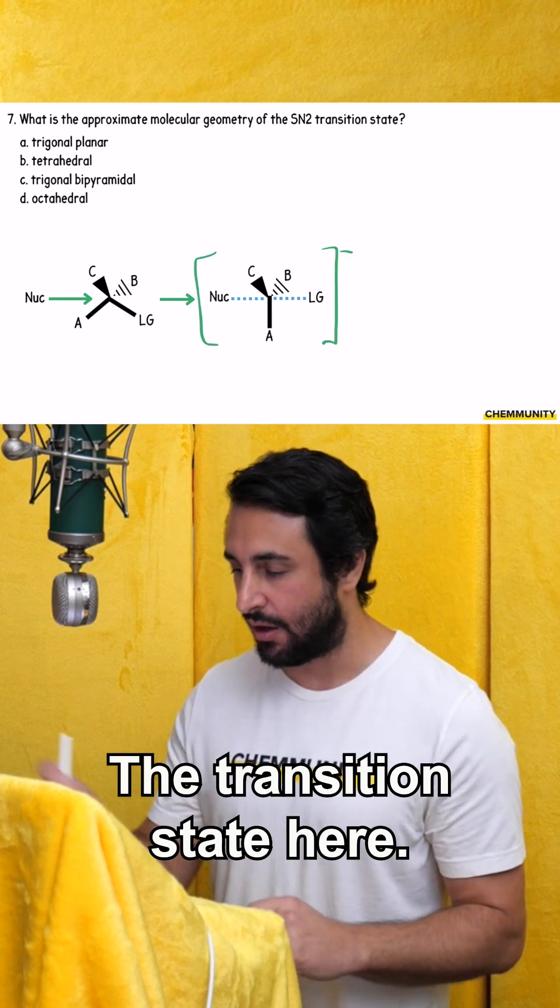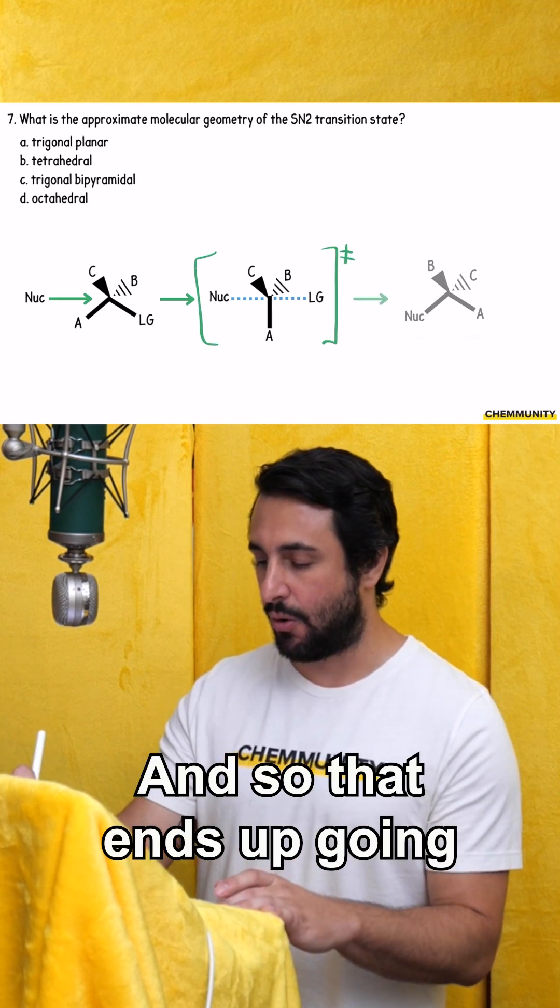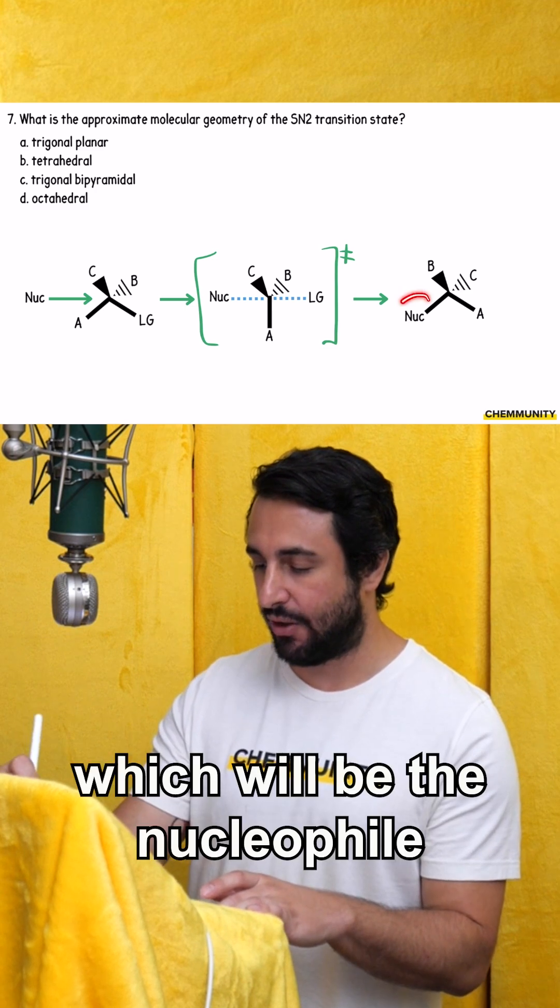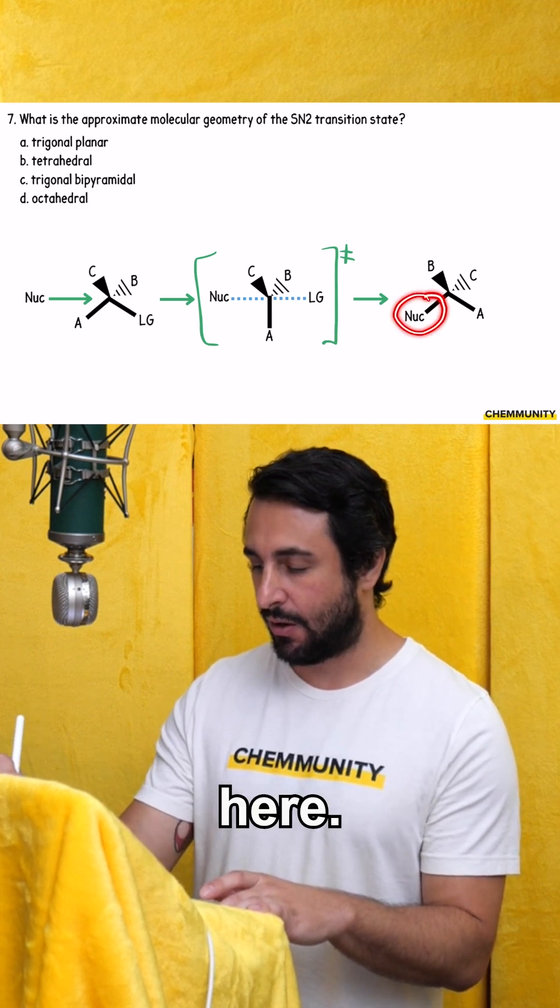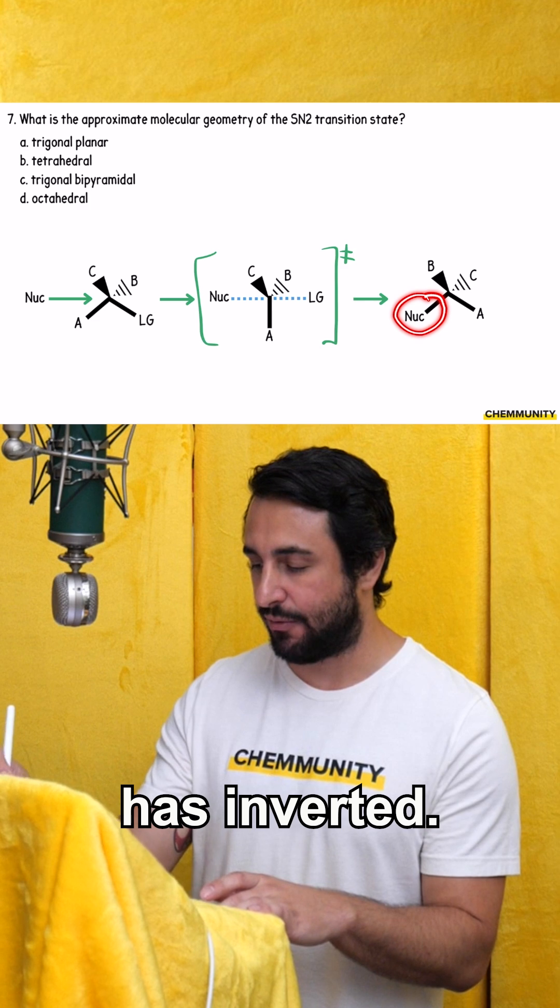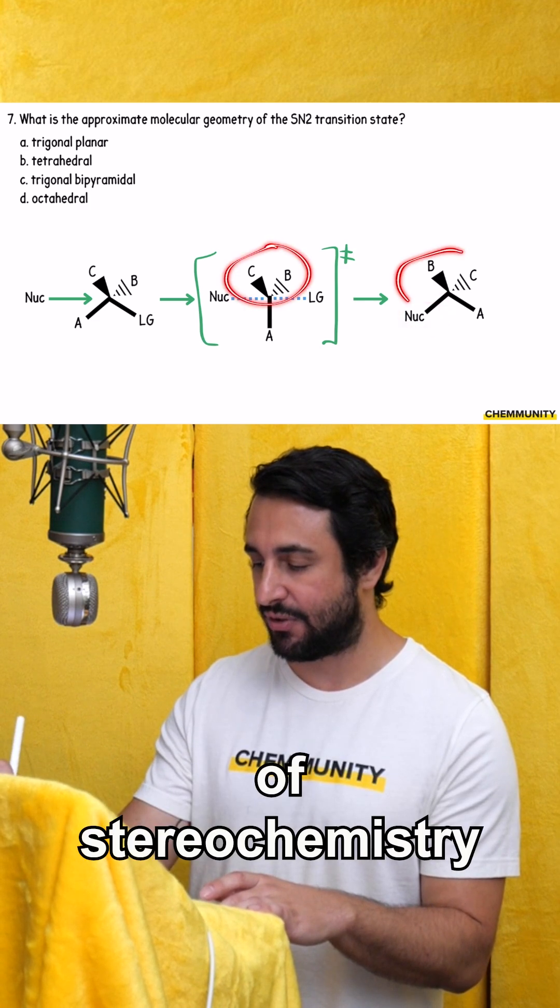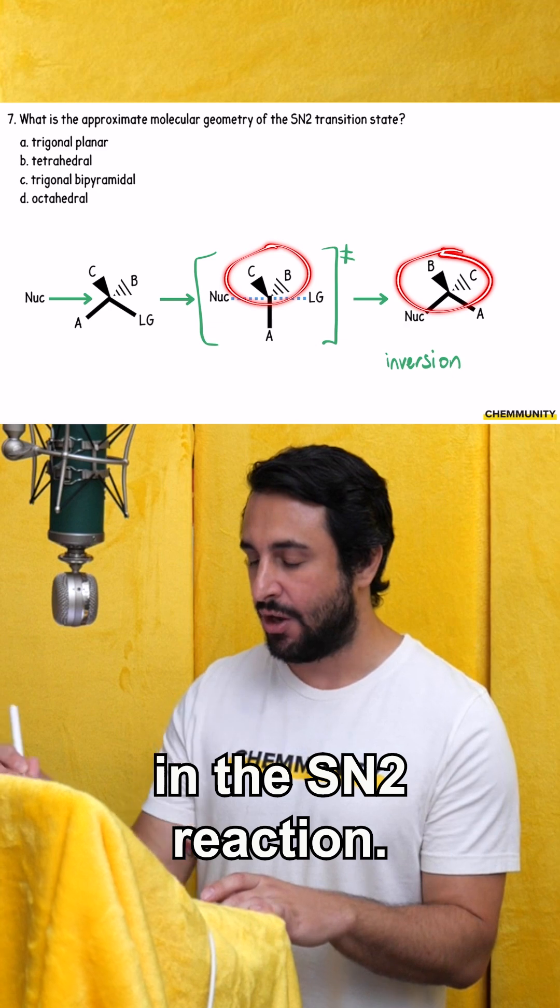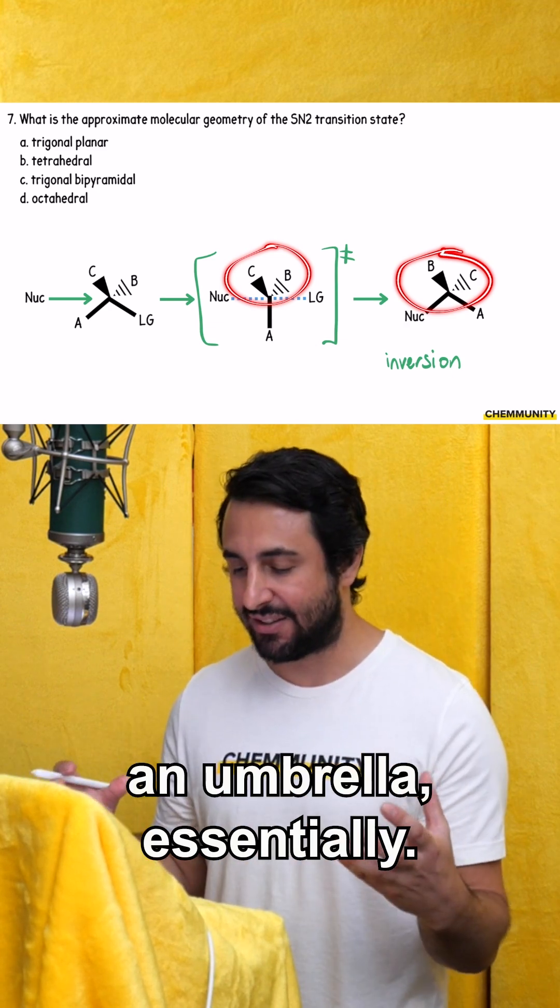So that's what this is, the transition state here. And so that ends up going to the product, which will be the nucleophile here. And then everything has inverted. So we know that we have inversion of stereochemistry in the SN2 reaction. So it's like inverting an umbrella, essentially.